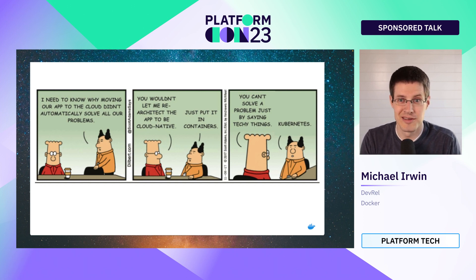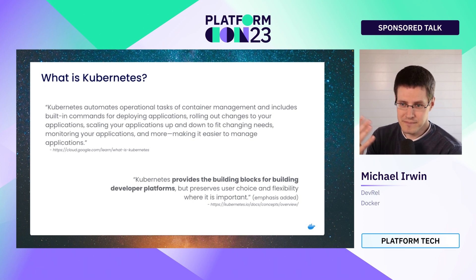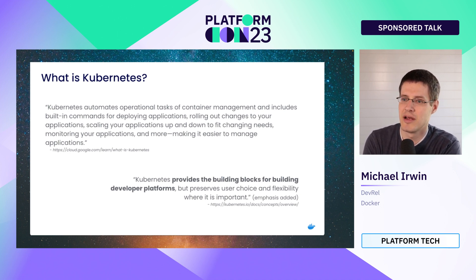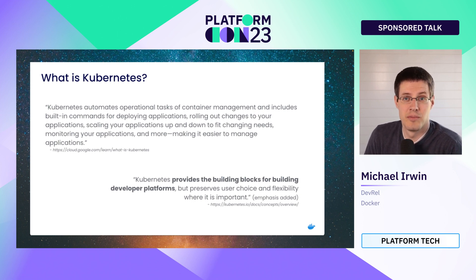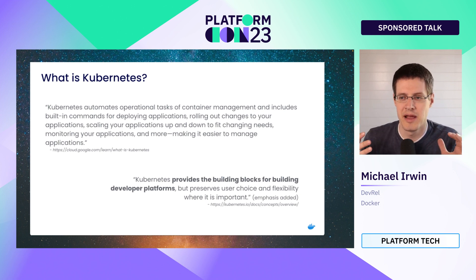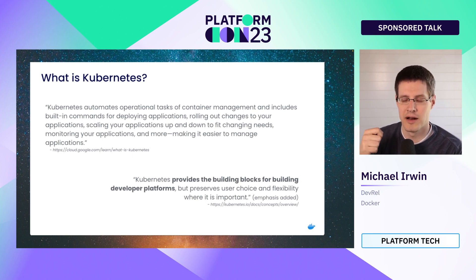While looking at Kubernetes specifically, I did a little research and looked at Google Cloud, where Kubernetes came from, and the Kubernetes documentation itself, to find out how they're positioning Kubernetes and what value it brings. From Google Cloud: Kubernetes automates operational tasks of container management and includes built-in commands for deploying apps, rolling out changes, scaling your apps up and down, monitoring your apps, and more — making it easier to manage applications. From the Kubernetes documentation itself: Kubernetes provides the building blocks for building developer platforms, but preserves user choice and flexibility where it is important. Pretty much across the entire spectrum, it's talking about managing applications and managing the running of applications.